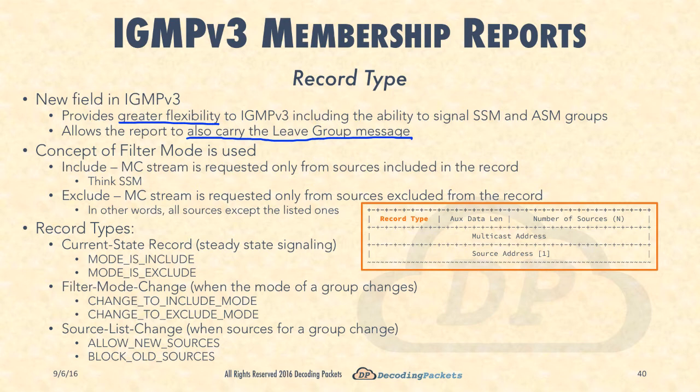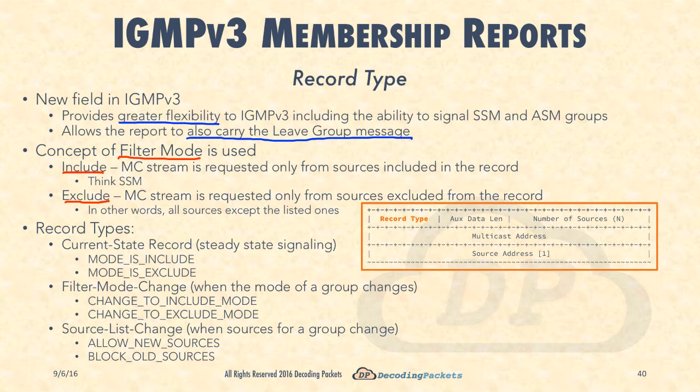The record type field includes the ability to signal not only SSM but also ASM - any source multicast - and also to exclude certain groups. It also allows the report to carry the leave group message, which was a separate message in IGMP version 1 and version 2. Now you can use a single report to carry that message, courtesy of the record type field. The first important concept is the filter mode, which the record type reflects. There are only two filter modes: include filter mode and exclude filter mode.